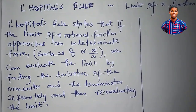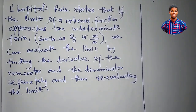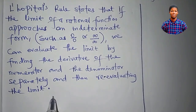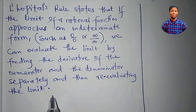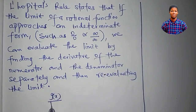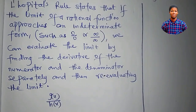It says rational function. By rational function, we mean that the function is a fraction. For example, a function g of x all over h of x — this is a rational function.